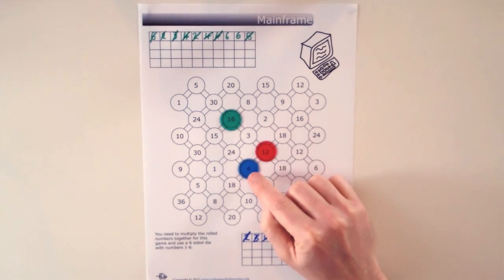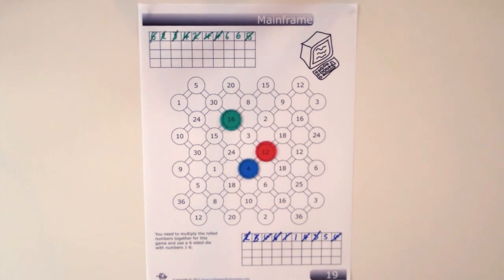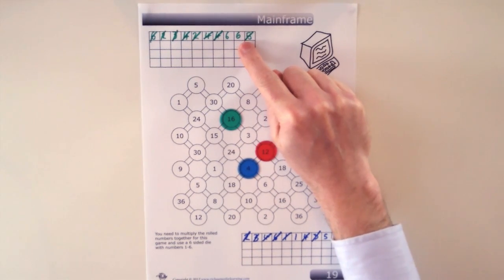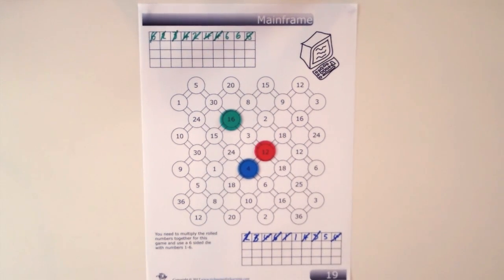So that red means blue can't move onto the 12 and green wouldn't be allowed to either. So during a turn any player can multiply two of their numbers together to equal any number on the grid and be able to put the blocker on that number.